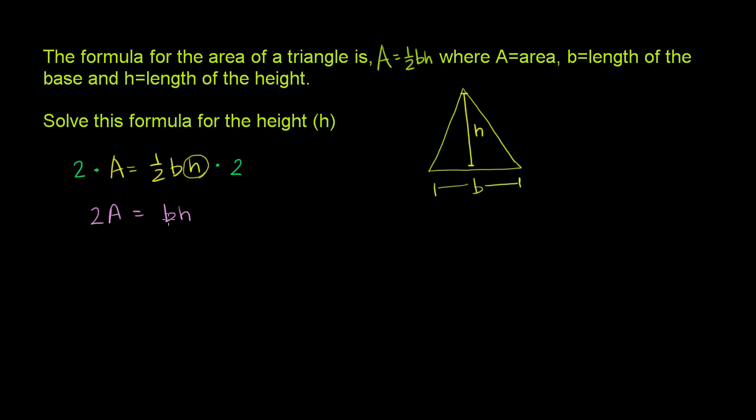And we're almost there. We have a b multiplying by an h. If we want to just isolate the h, we could divide both sides of this equation by b. We're just dividing both sides. You could almost view b as the coefficient on the h. We're just dividing both sides by b.